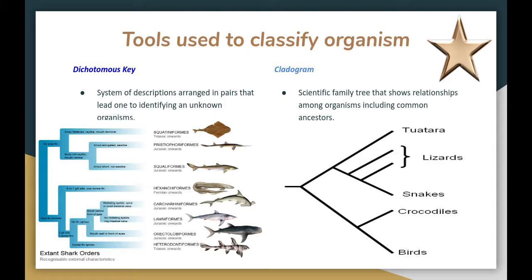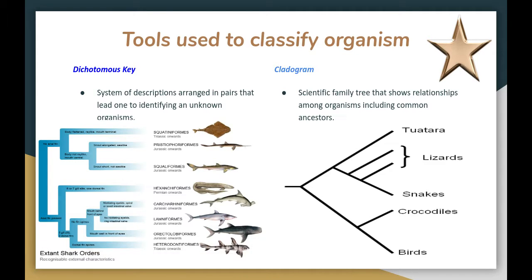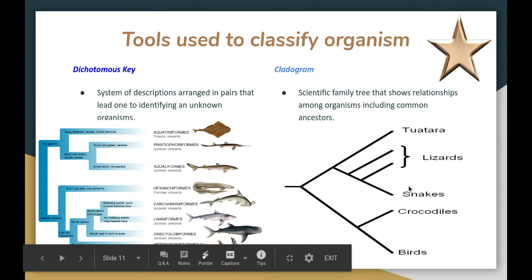We're going to talk about two types of tools used to classify organisms. The first is called a dichotomous key — what I showed you in class when we did the salamander activity. You had a list of questions, and if it applied to that organism you continued on until you found the correct match and labeled that organism.